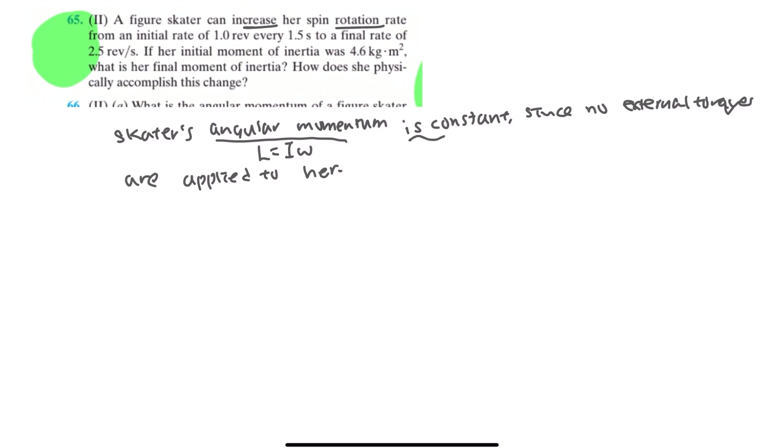And so the angular momentum is constant. Having this set, we can make this formula: L initial equals L final. And because L equals inertia times omega, it would be I initial omega initial equals I final omega final.